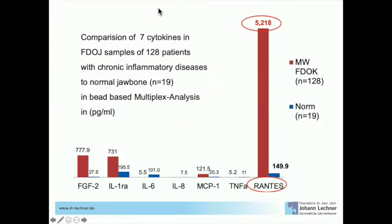TNF-alpha and interleukin-6 provide the ignition for inflammation, and here in our jawbone cavitations we have no ignition. This is why it's very subtle, subliminal, and chronic — and why it's not overtly harmful to the patient, except in cases where there is a neurologic inducing effect, which is only a small part of all the FDOJ cases we find in our clinic.